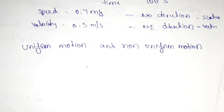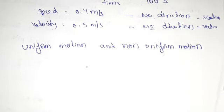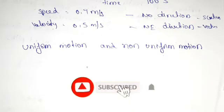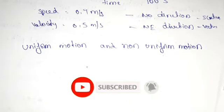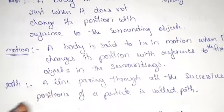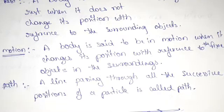We have a lot of confusion about motion. If we talk about uniform motion and non-uniform motion, we have a lot of confusion. A body is said to be in motion when it changes its position with reference to the fixed objects in the surroundings. That is the motion.